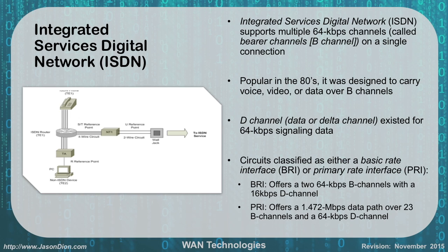ISDN circuits were classified as either basic rate, BRI, or primary rate, PRI. The BRI offered two 64K B channels and one 16K data channel. The PRI had 23 B channels and one 64K D channel. Small businesses would get a BRI with two 64K channels giving them a 128K connection — significantly faster than dial-up at 28K. Nowadays ISDN is being relegated to the past because it's very slow compared to DSL, cable, or fiber optic. You'll only really see it in older video teleconference suites as a legacy network.